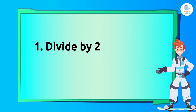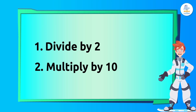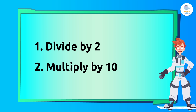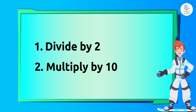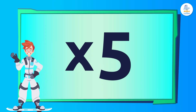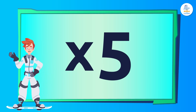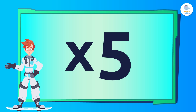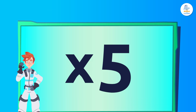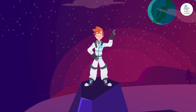This technique of dividing by 2 and then multiplying by 10 works for both odd and even numbers. It's a quick and easy way to multiply by 5 mentally. Try it with other numbers and see how easy it is. Now, who wants to try it? Let's practice together!